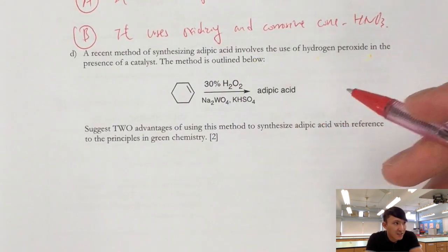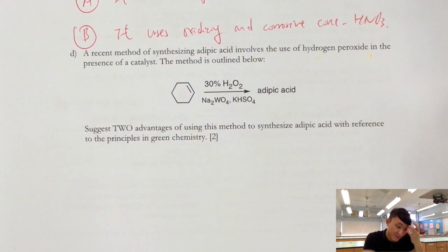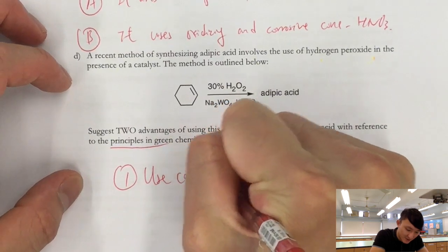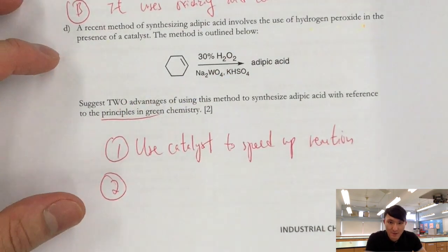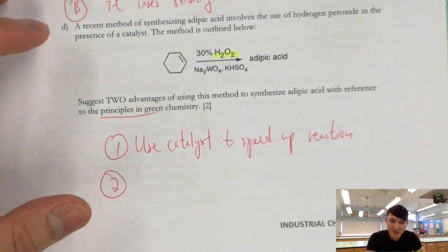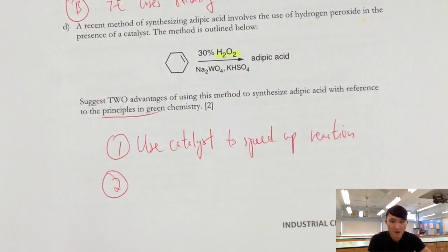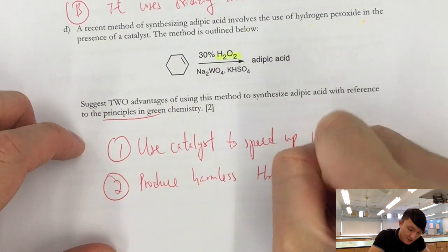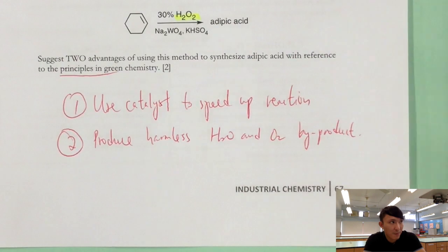Now down here, we have an upgraded or more mature development of adipic acid from cyclohexane using hydrogen peroxide. And there is also catalyst. Suggest two advantages of using this method to synthesize adipic acid with reference to the principles in green chemistry. First of all, of course, use catalyst to speed up reaction. And secondly, this one could be difficult. Knowing that we are using hydrogen peroxide as the reactant or the oxidizing agent. You know, hydrogen peroxide, it is reduced to oxygen. So, it will produce harmless H2O and O2 byproducts.